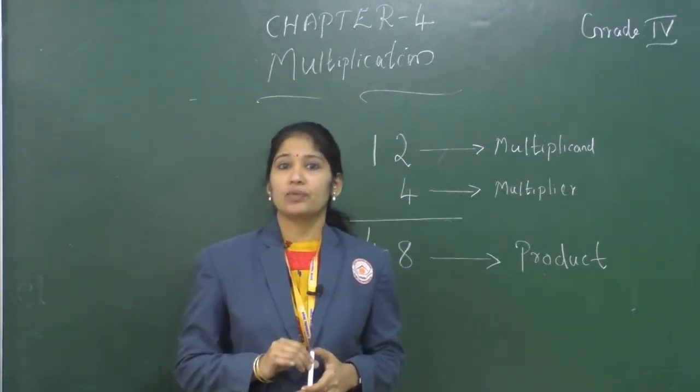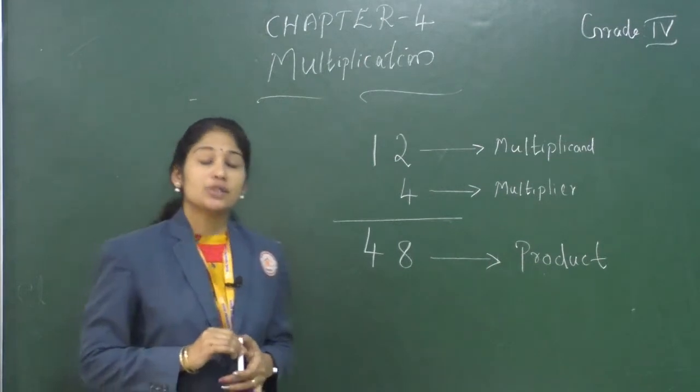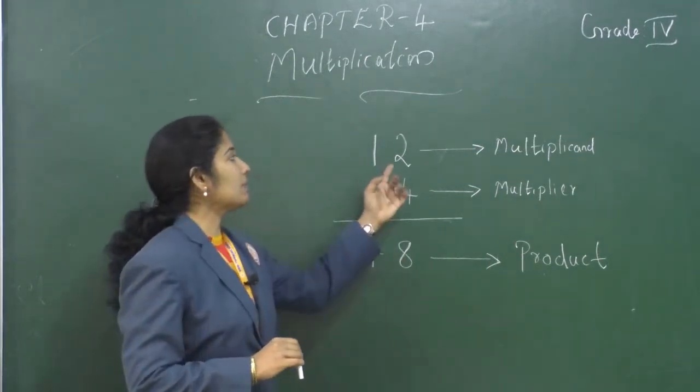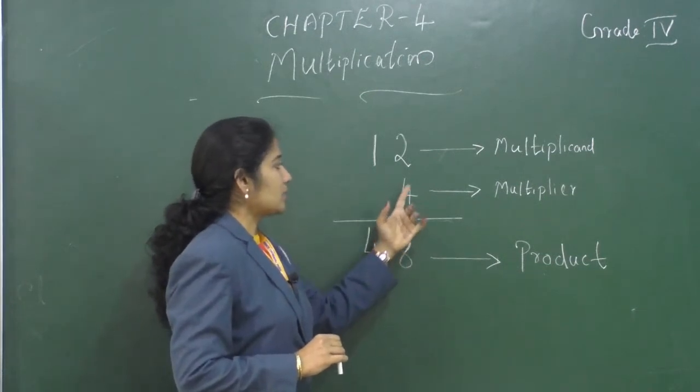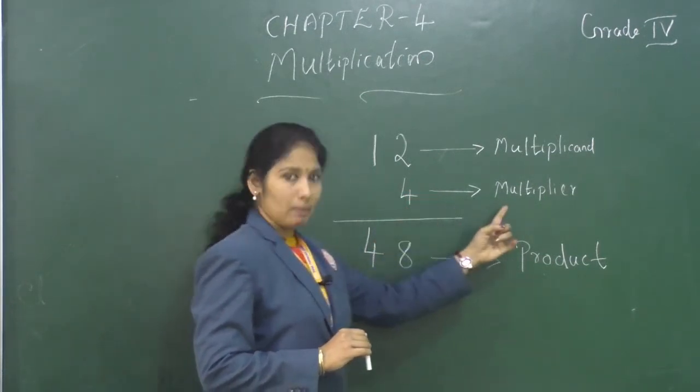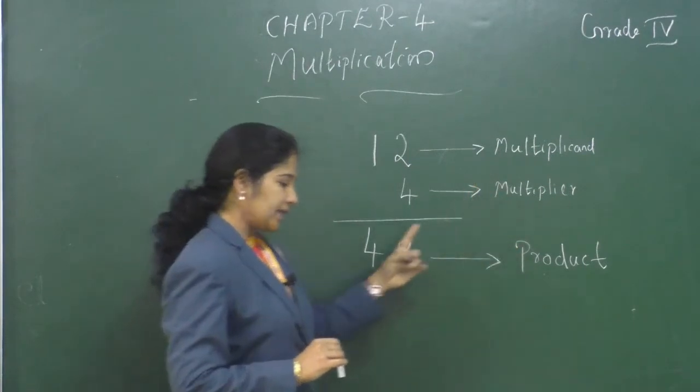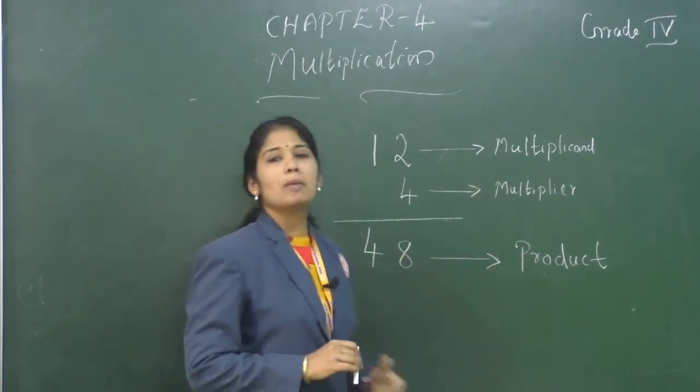As we learned, when we multiply two numbers, the first number is called multiplicand and the second number by which the multiplicand is multiplied is called multiplier, and the result is called product.